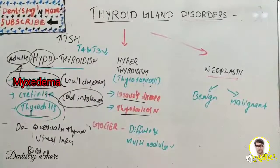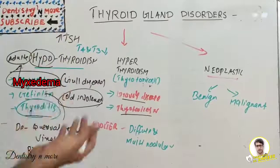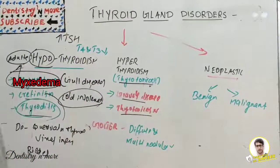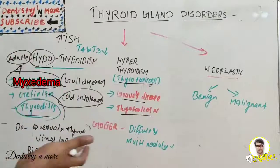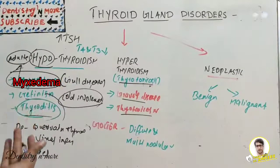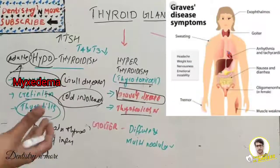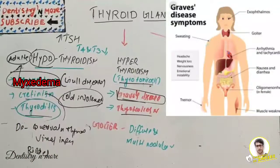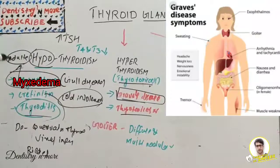Now let's learn hyperthyroidism — a condition where circulating hormone levels are very increased, basically due to thyroid toxicosis. Causes include Graves' disease, toxic multinodular goiter, toxic adenoma, iodine excess, or activation of TSH receptors. The most important is Graves' disease — the most common cause of endogenous hyperthyroidism — characterized by diffuse enlargement of the thyroid gland with lymphocytic infiltration and pre-tibial myxedema.